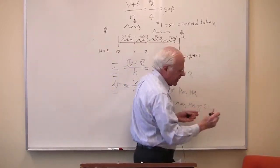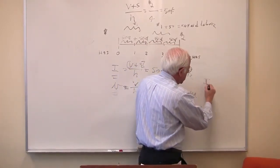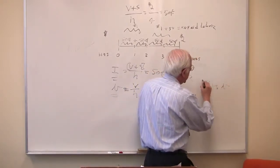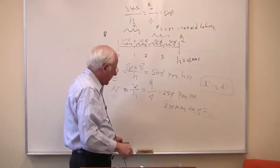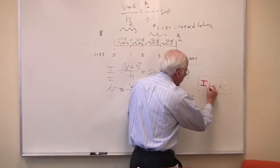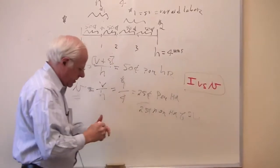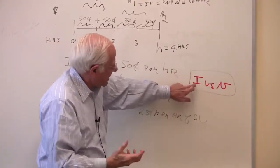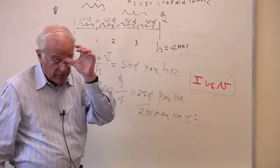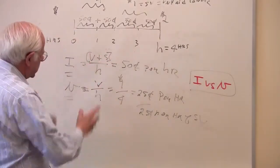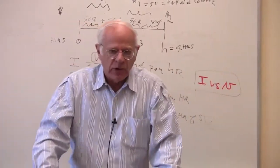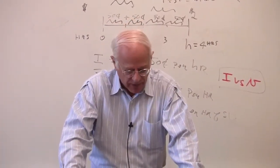On a per-labor-hour basis, we have I — the intensity of exploitation — versus little v, the wage for the worker. The more the capitalist can increase the intensity and pay the same wage, the more surplus will arise in this relationship between buyers and sellers of labor power. That's the argument Marx has developed to explain the source of surplus value, and I'm going to build upon that next time.